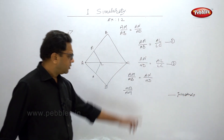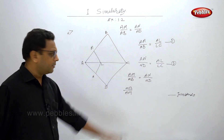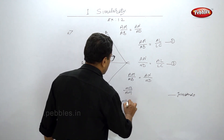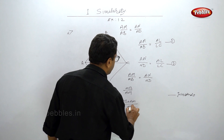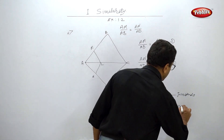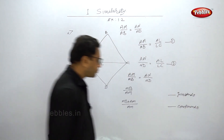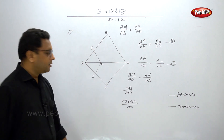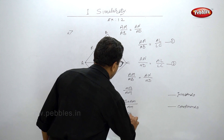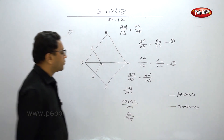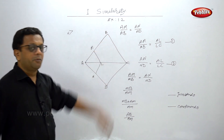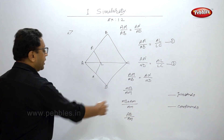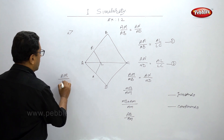After invertendo we get ND/AN. Using componendo, MB + AM over AM gives AB/AM on the left side, since MB + AM = AB. Then by invertendo again we get AM/AB, which is what we want. Now solve the right-hand side in the same way.